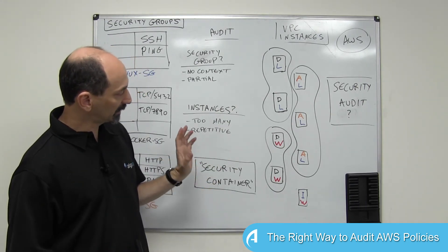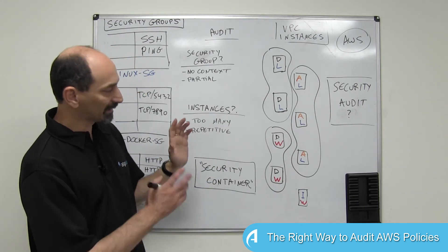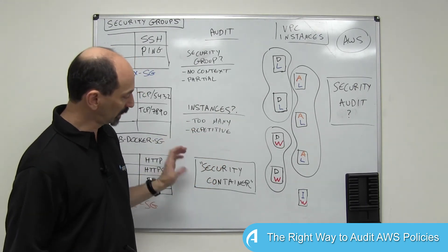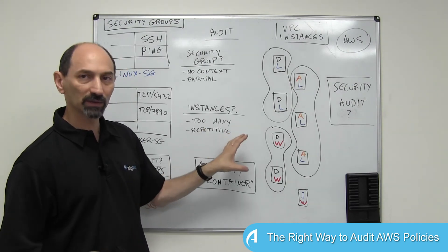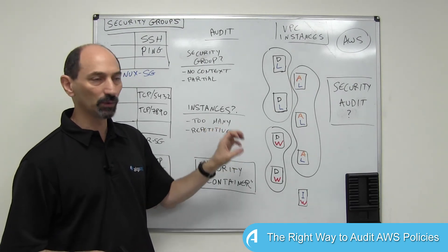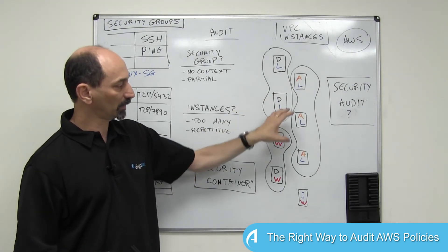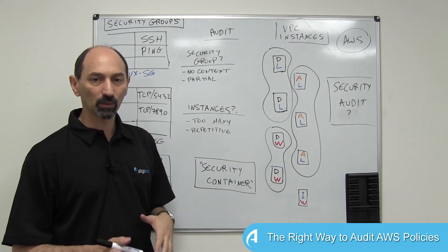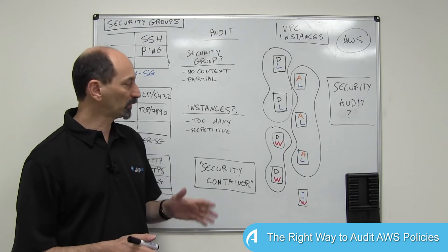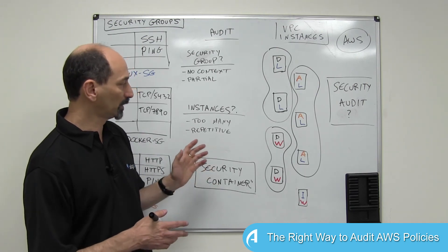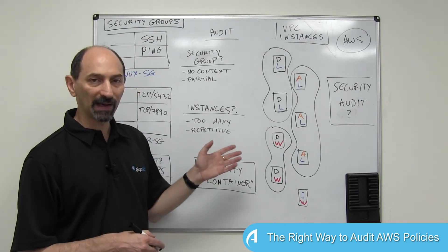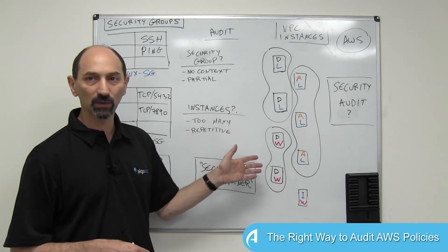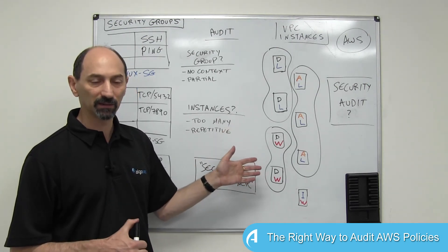So if you look at the audit at this level of abstraction — you look at these security containers and review each security container — then on the one hand, you've covered every possible active combination of security groups that you have in your estate.